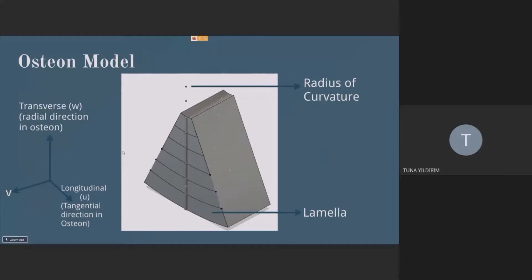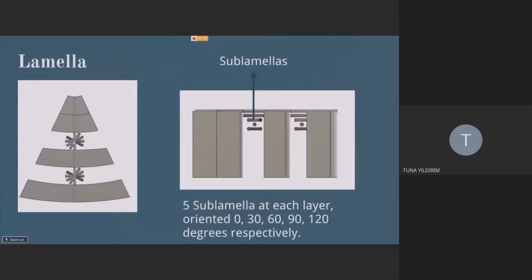In a lamella, there are 5 sublamellas. These are my directions. This is my radius of curvature to calculate. And you can see the sublamellas are aligned like this in a layer. I've made fewer sublamellas to calculate something simple and then go into something complex.